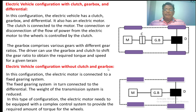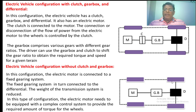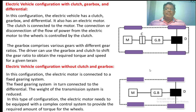The second configuration is the electric vehicle without clutch and gearbox. In this case the clutch is removed; the motor, gearbox, and differential remain. The driver can apply the gear directly. The gear used here is a fixed gear system — not multiple gears — so there is no need for a clutch.